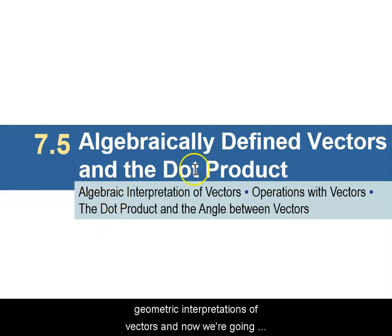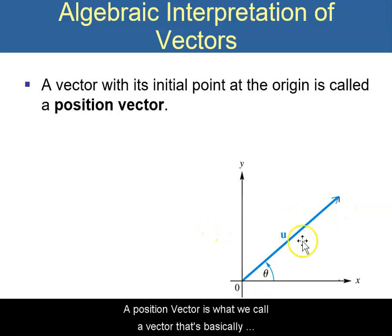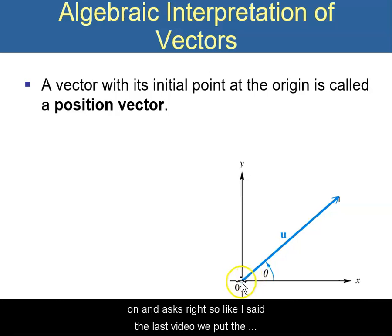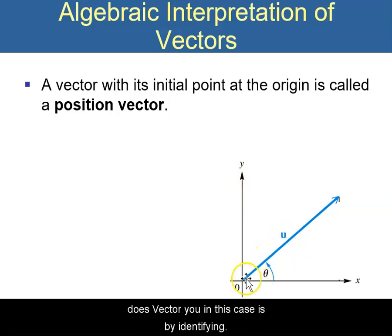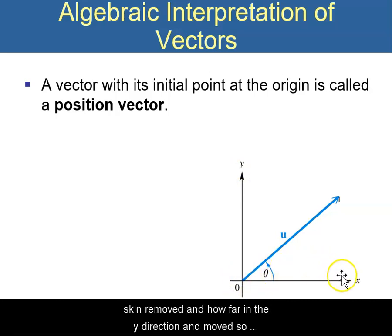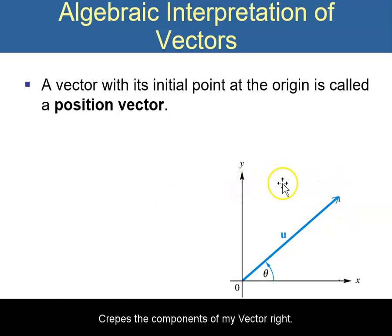So we had the geometric interpretations of vectors. Now we're going to work on the algebraic interpretations. A position vector is a vector that's placed on an axis — we put the initial side at the origin and then the vector goes into whatever direction it needs to. The way that we label this vector u is by identifying how far in the x direction it moves and how far in the y direction it moves, so basically where the terminal point ends creates the components of my vector.